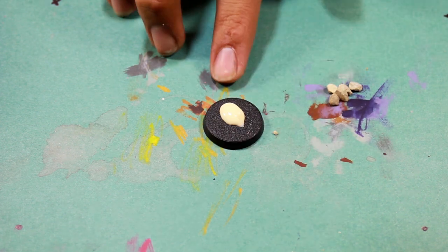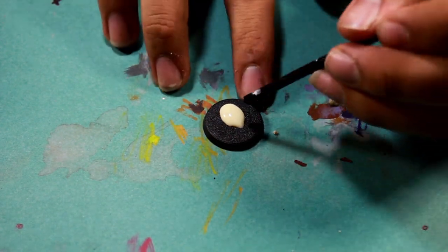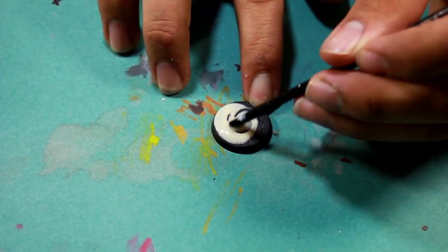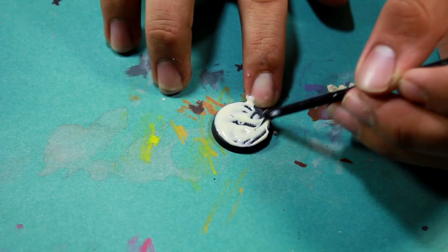First thing we're going to do is add our glue to the base, PVA glue or you could use wood glue, which I'm using here. Make sure you coat the entire base with it.